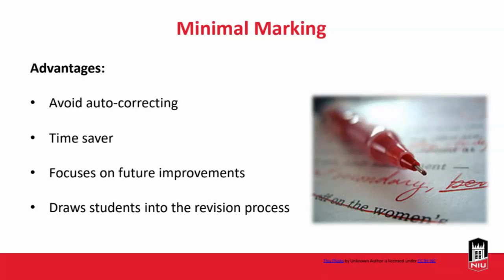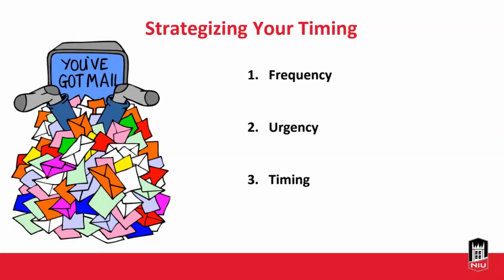How frequently can students expect to hear from you? This should be outlined early in your course and reiterated in the syllabus, assignment prompts, or discussion boards. Prioritize urgency — think about how many announcements you're sending per week and how many other courses your students are enrolled in. Focus on what you really want them to prioritize. And consider timing: when students receive feedback, what's their turnaround time to practice those skills?